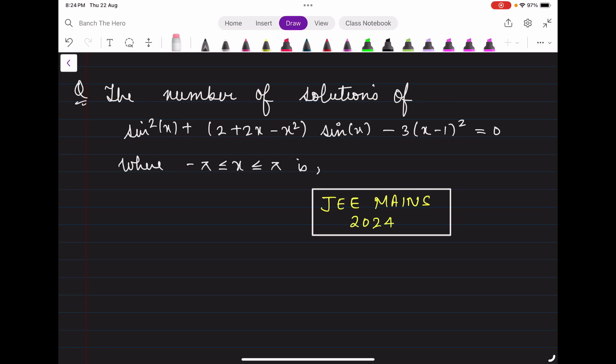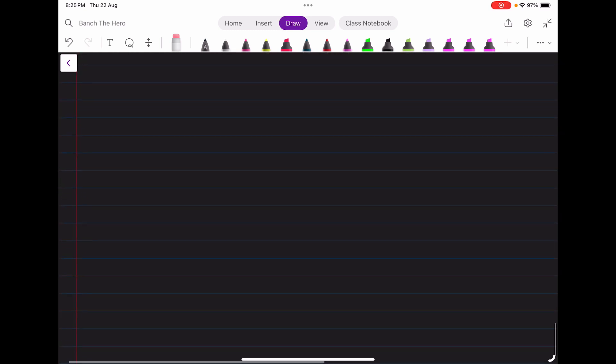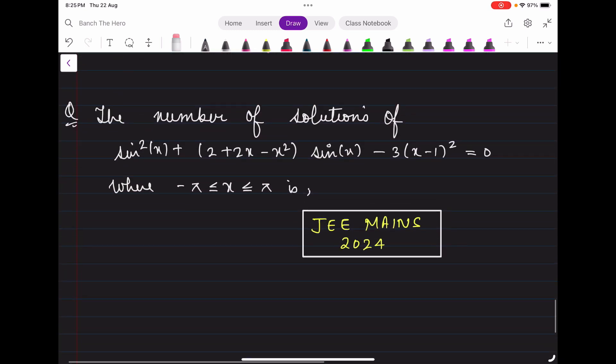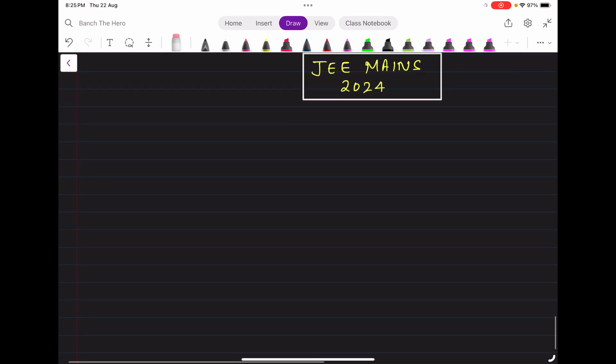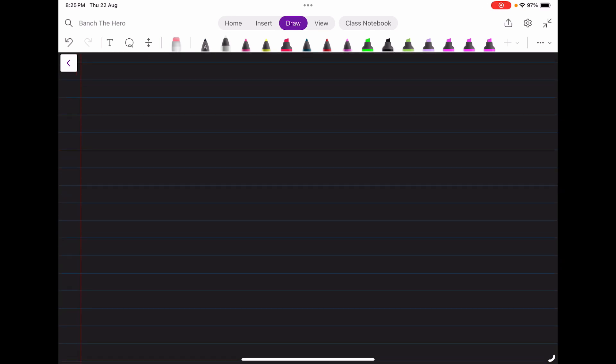So this is our next question, which asks for the number of solutions of this equation: sin²x + (2 + 2x - x²)sin(x) - 3(x - 1)² = 0, when x is lying between -π to π. Let's see how to check this question. This is a question which came in JEE Mains 2024.